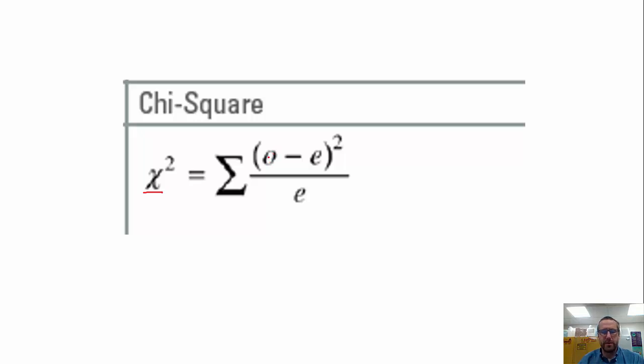the values that you got through experimentation or genetics crosses, were exactly the same as the expected values, what would be the outcome, the mathematical outcome of this? Well, in fact, it would be zero.